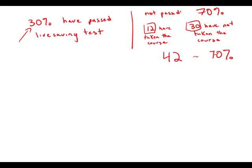Well, if 42 is 70 percent, I notice 42 is divisible by 7, so I'll just divide both sides by 7. That means that 6 would be about 10 percent. And if 6 is 10 percent, it means that there are 60 people in the entire course. And this is answer choice A.